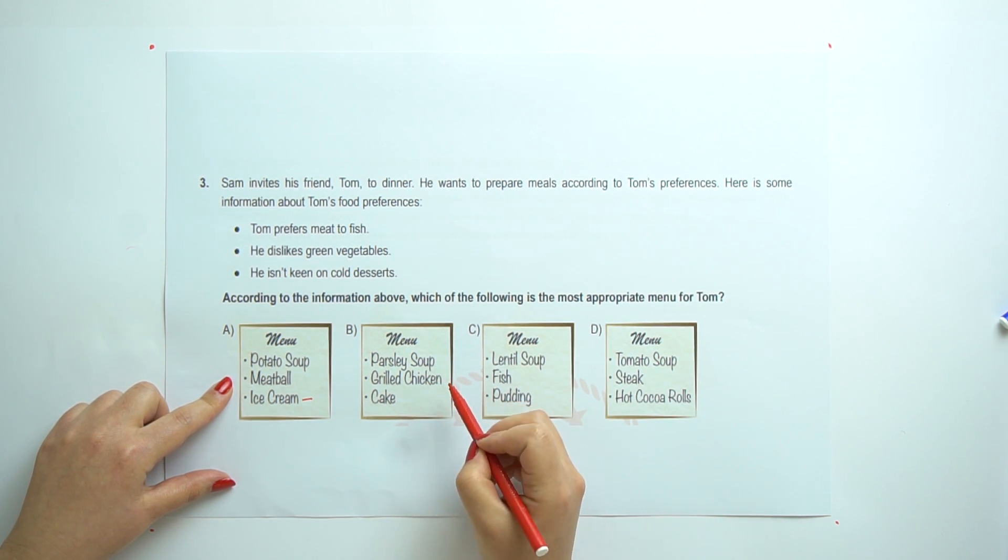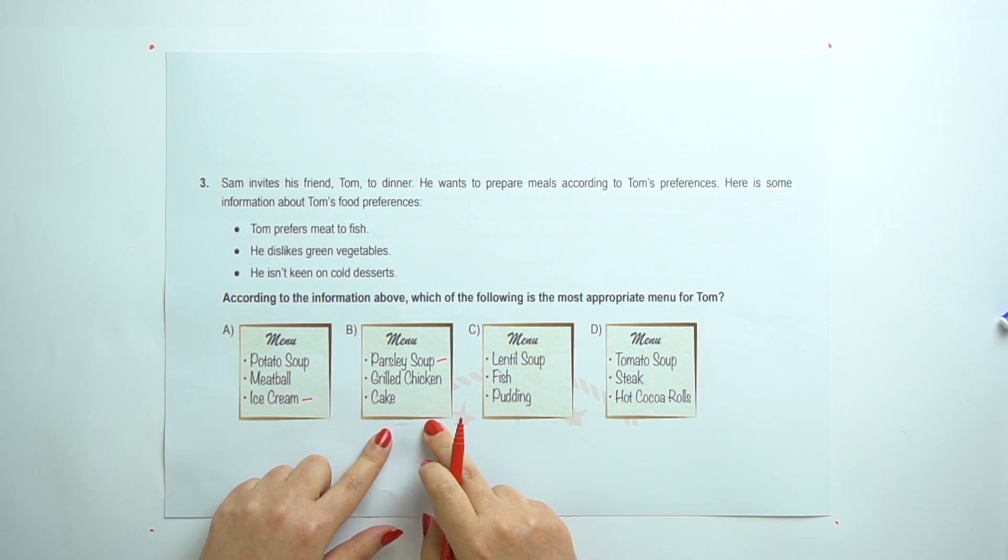B. Parsley soup, grilled chicken and cake. Here is the parsley soup. It is a kind of green vegetables. So, he doesn't like this one too.